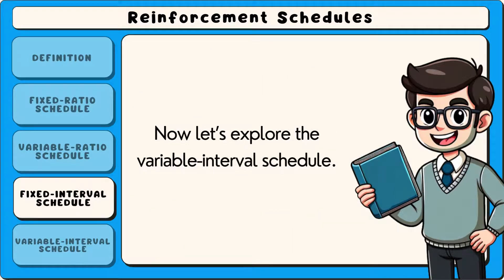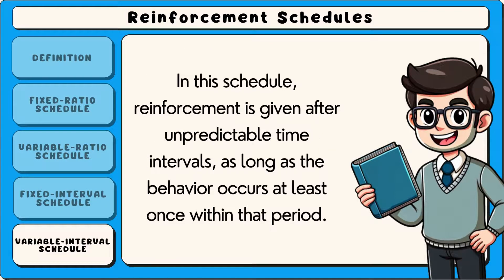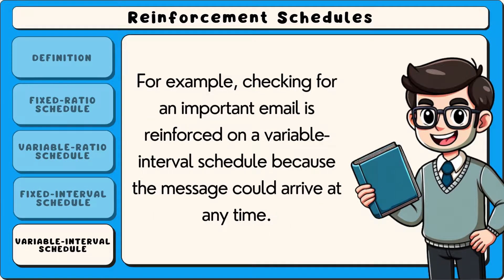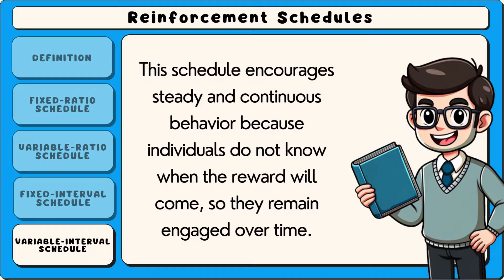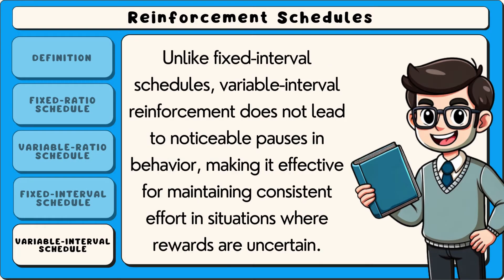The variable interval schedule provides reinforcement after unpredictable time intervals, as long as the behaviour occurs at least once within that period. For example, checking for an important email is reinforced on a variable interval schedule because the message could arrive at any time. This schedule encourages steady and continuous behaviour because individuals do not know when the reward will come, so they remain engaged over time. Unlike fixed interval schedules, variable interval reinforcement does not lead to noticeable pauses in behaviour, making it effective for maintaining consistent effort in situations where rewards are uncertain.